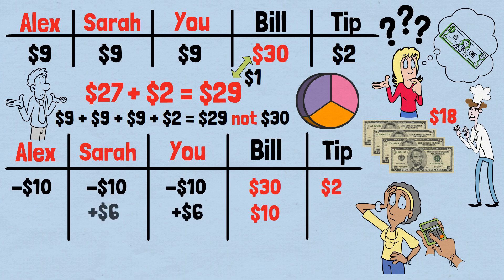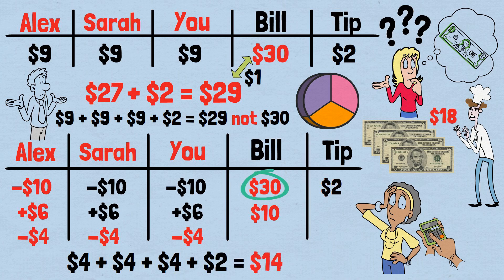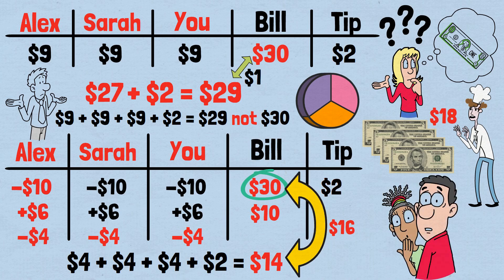He can now refund each of you $6. You each originally paid $10 but got $6 back, so you each effectively paid $4 for lunch. The busboy kept $2 for himself. Total accounted for: $4 plus $4 plus $4 plus $2 equals $14. But you originally paid $30 — now $16 is missing. This is completely absurd. How can $16 simply vanish? Something is clearly and catastrophically wrong with this setup.